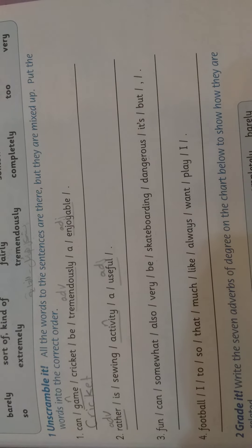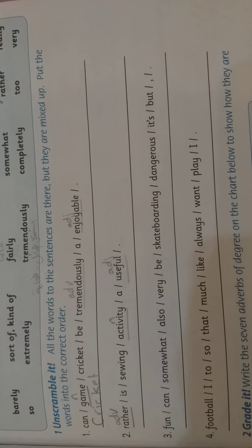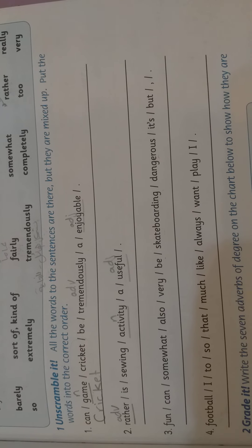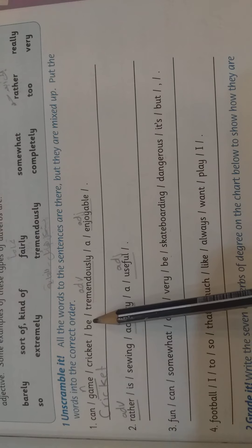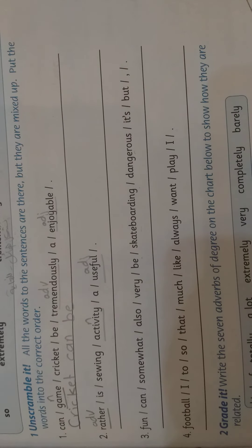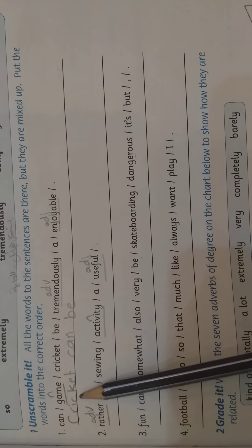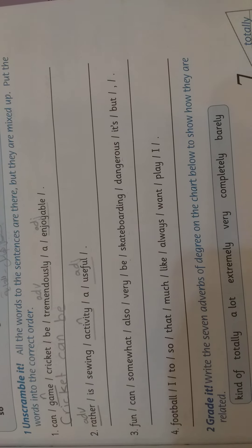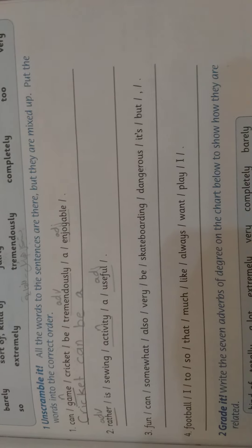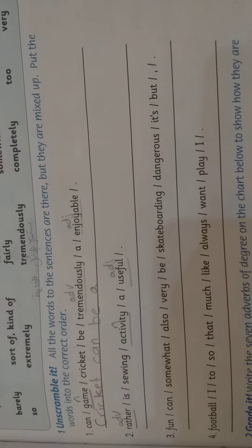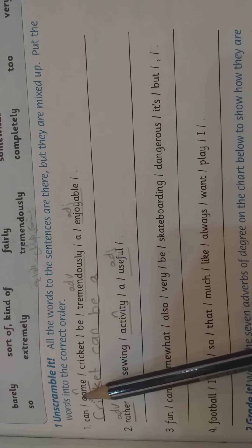Now we have to look for the verb. Where is the verb? The verb is can be. So we will write can be. The subject is cricket. The verb is can be. Okay, now we will write a. Cricket can be a. Let's write the type of the remaining words to complete arranging the sentence correctly. Game is a noun. Write the letter N. Tremendously is an adverb.